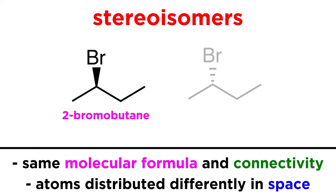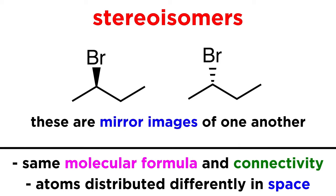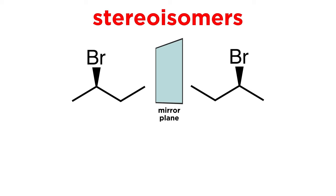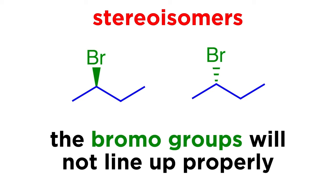Take this molecule, 2-bromobutane. This bromo group must be on either a dash bond or a wedge bond, but if we draw both options we must understand that these are not the same molecule — they are mirror images of one another. If we take the one on the wedge bond and reflect it across this mirror plane, we get its mirror image, and if we then flip it over to try to line up the main chain, this bromo group pointing towards us will end up pointing away from us, on a dash bond, and will not line up with the first bromo group.